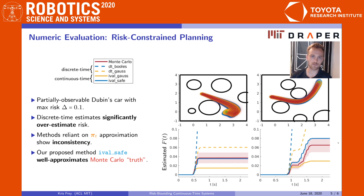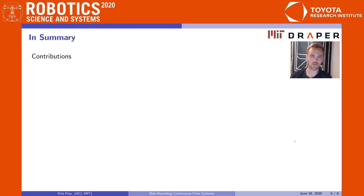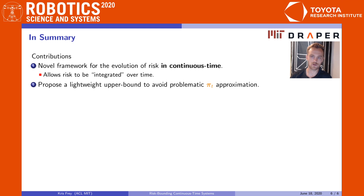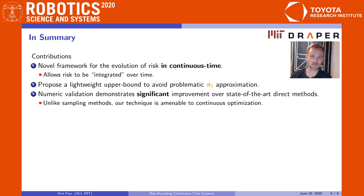We have more results in the paper, but in summary, our contributions here are threefold. First, we derive a novel framework for the evolution of risk directly in continuous time, allowing risk to be integrated over time in a principled way. Secondly, we propose a lightweight upper bound that avoids explicit approximation of the anthropic belief, along with all of its associated challenges. Finally, numeric validation of our method demonstrates significant improvement over state-of-the-art direct methods, and unlike Monte Carlo, our technique is well-suited to continuous optimization. This ultimately facilitates robust and efficient risk-aware trajectory optimization for a large class of dynamic systems.